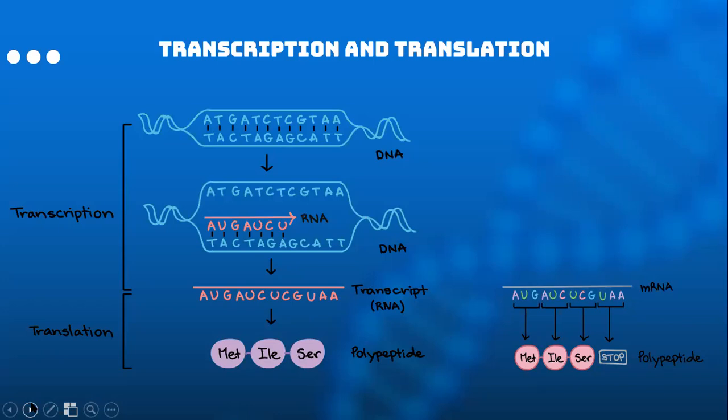In the second part, you see the mRNA strand in red. It gets its nucleotides from the DNA strand, but in this case, instead of having thymine, it is replaced with uracil, represented by U. So you can see that T binds with A, A binds with U — which replaces the T — G binds with C, and T binds with A, and so on. This is how the mRNA transcript is formed — that is the third part.